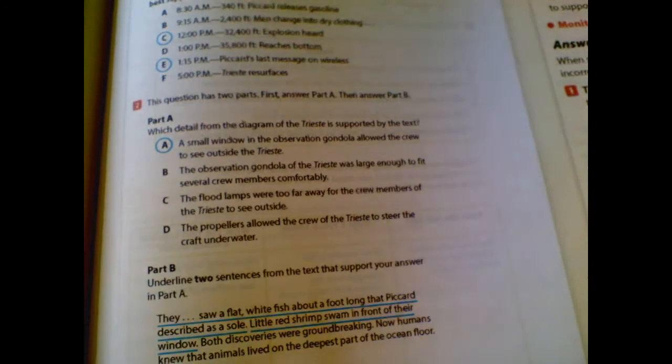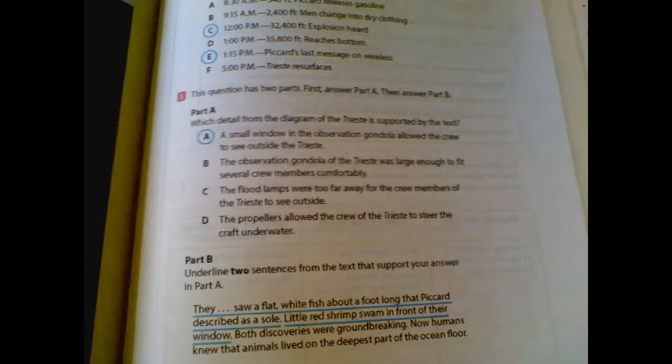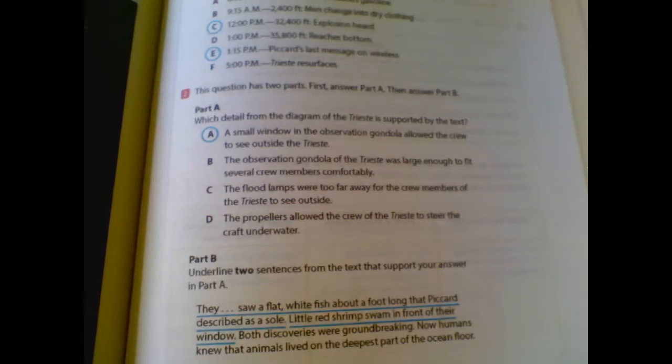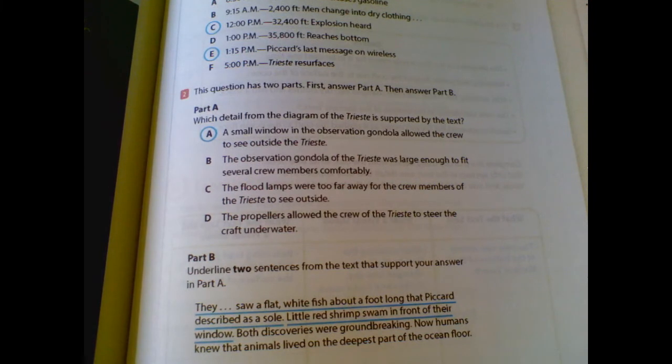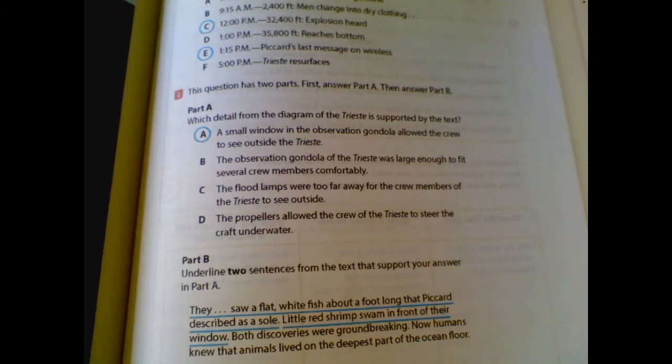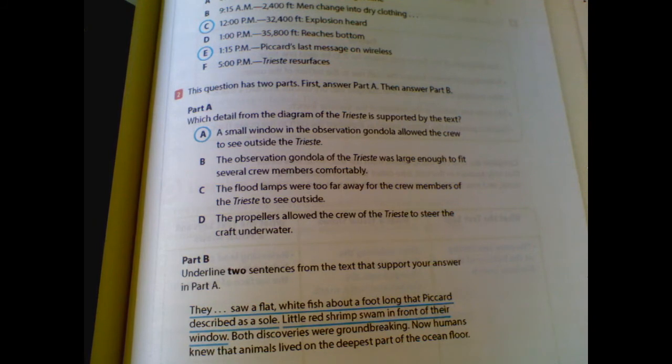Let's look at the next one. Number two. So the question has two parts. First answer part A, then answer part B. Part A, which detail from the diagram of the Trieste is supported by the text? So the correct answer choice is A because the diagram shows a small window and paragraph 7 says that the crew was able to see outside the craft.